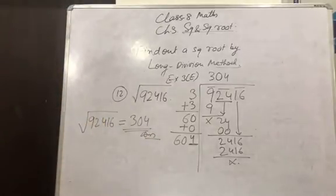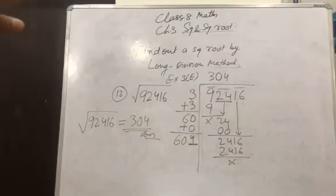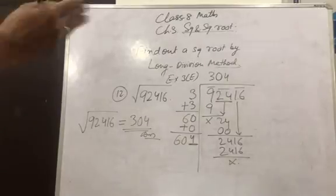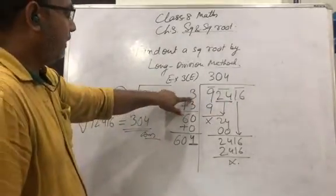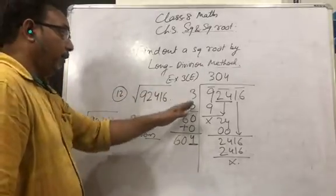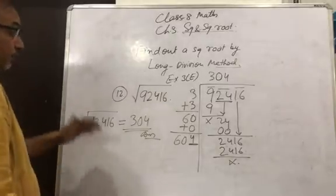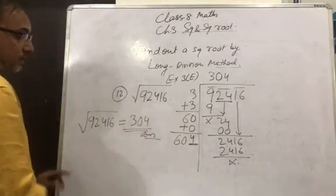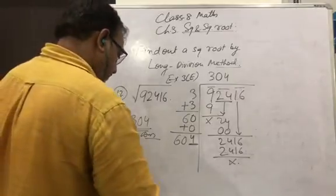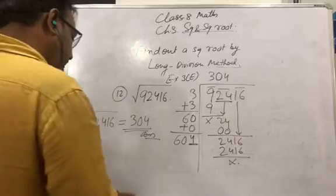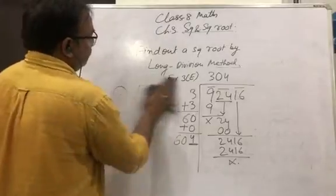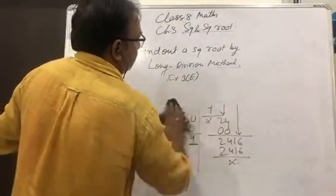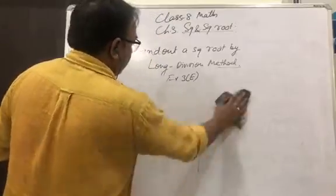Now it is clear. Two things are important: one is the bar, which we make from right to left; and second, add the unit digit number — the same unit digit — when building the next divisor. Now let us move to exercise 3E, question number 30.